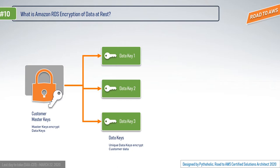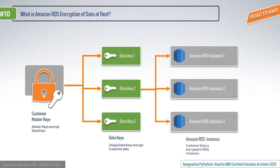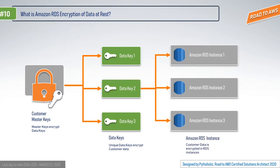To summarize the three steps: first, you create the customer master keys. Second, from that master key you encrypt the data keys. Third, those data keys are used to encrypt the customer data in the RDS instance. This is the envelope encryption pattern used by AWS KMS.